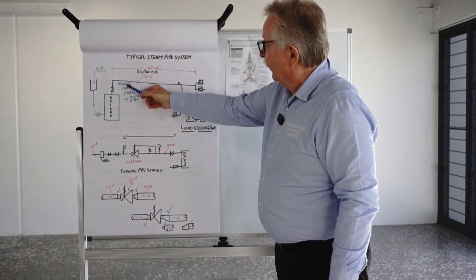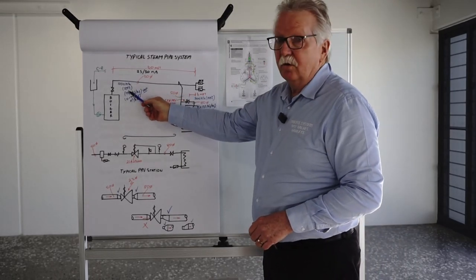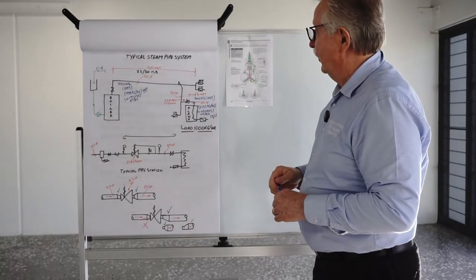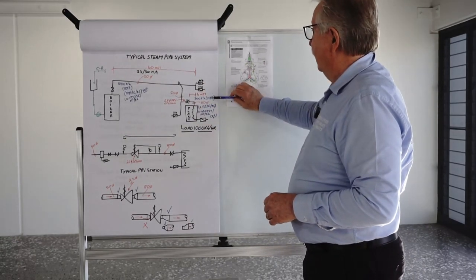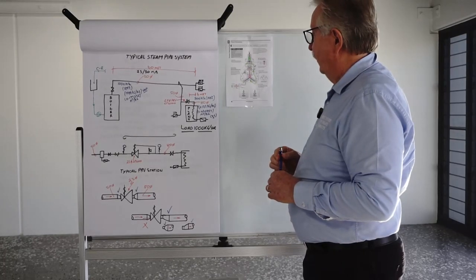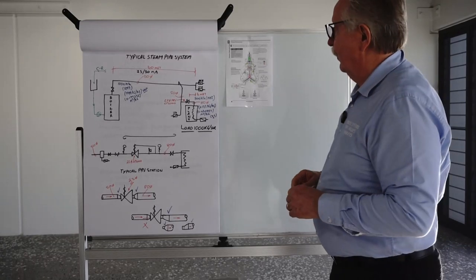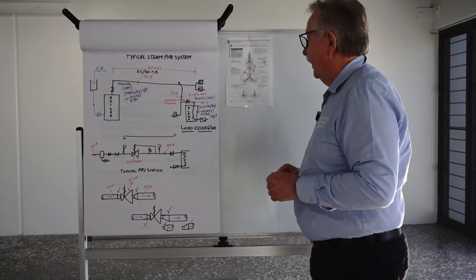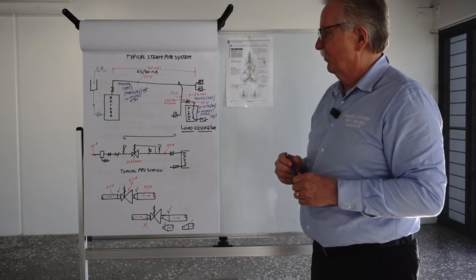In this case 1000 kPa steam is 184 degrees C. If you look at your steam tables you can verify that. 300 kPa steam pressure is 144 degrees C. So there's a 40 degrees C difference between the 1000 kPa and the 300 kPa. So that's a couple of reasons why you might pressure reduce.